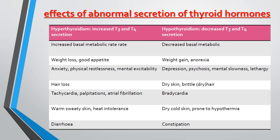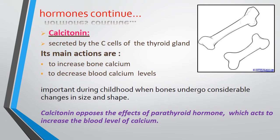These are the common symptoms of hyperthyroidism and hypothyroidism. The next hormone is calcitonin. It is secreted by the C-cells of the thyroid gland and its main action is to increase bone calcium and decrease blood calcium.